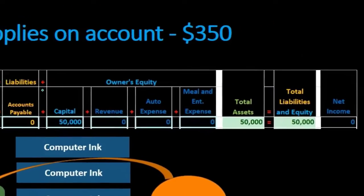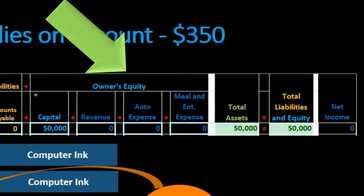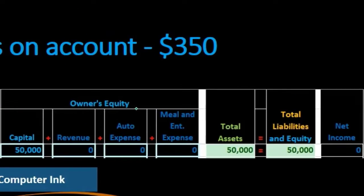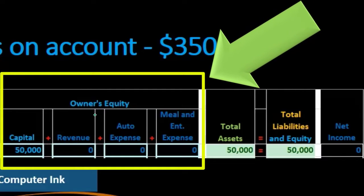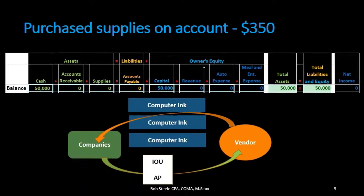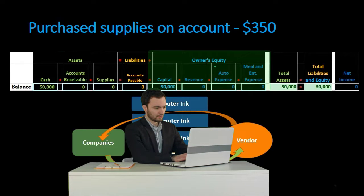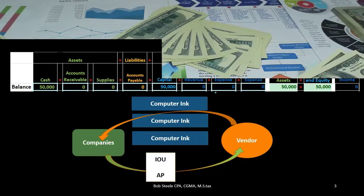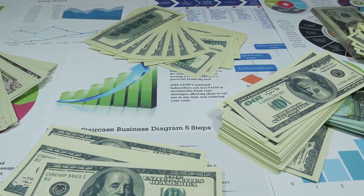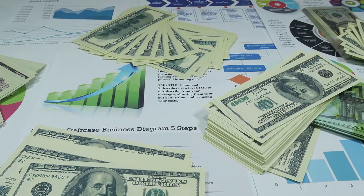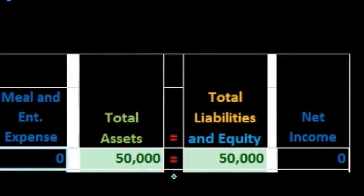The equity section includes capital and the entire income statement — that being revenue and expenses. Note that the entire income statement is represented within equity. We currently have owner's equity, but in a partnership it would be partnership's equity, and in a corporation it would be stockholders' equity. We currently have total assets of $50,000 equaling total liabilities of $50,000.